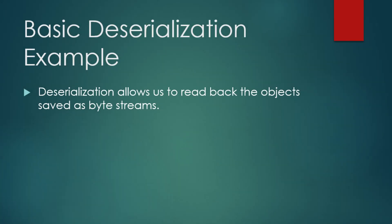Now let's see how we can deserialize the person object we just serialized and retrieve its data. In this example, we use ObjectInputStream to read the person object from the person.ser file. The object is then cast back to the original type and we print its attributes to the console. This demonstrates how we can persist and retrieve objects using serialization.